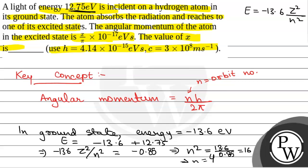So the value of n will be equal to 4. Therefore, the value of angular momentum will be equal to 4h/2π, which is equal to 2h/π. So putting the value, we get 2 × 4.14 × 10^-15, that is equal to 828/π × 10^-17 electron volt seconds. So the value of x will be equal to 828.